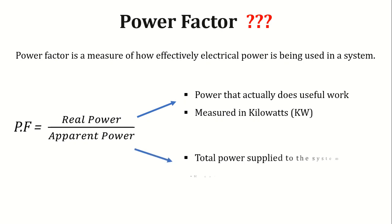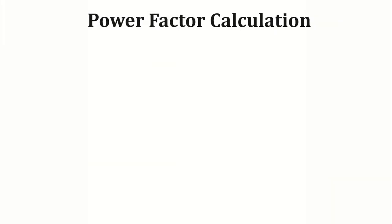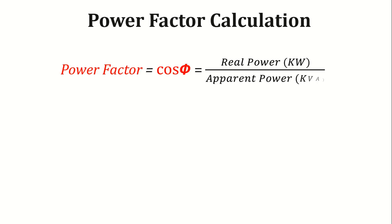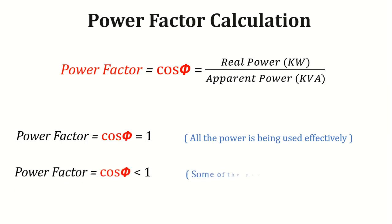While apparent power is the total power supplied to the system, it is measured in kilovolt amperes, kVA. Now let's calculate power factor. Mathematically, power factor is expressed as mentioned in the below equation. A power factor of 1 or 100% means all the power is being used effectively, while a power factor less than 1 indicates inefficiencies in the system.